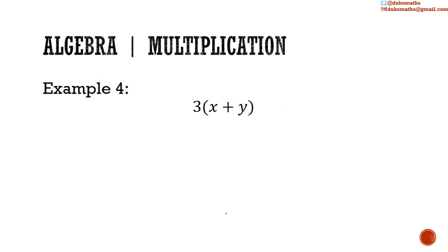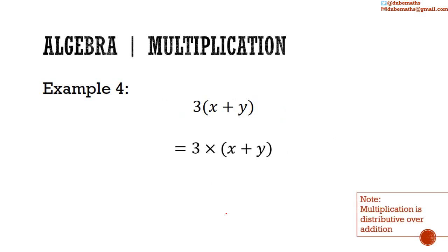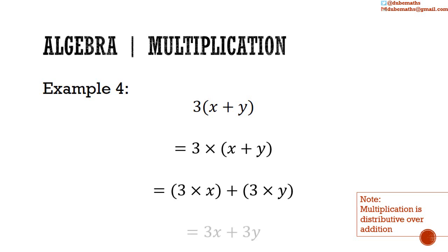Our fourth example: 3 multiplied by (x plus y). We need to remember that multiplication is distributive over addition — we learned this in the distributive law in an earlier video. So when you have 3 multiplied by (x plus y), we get 3 multiplied by x added to 3 multiplied by y, which equals 3x plus 3y.